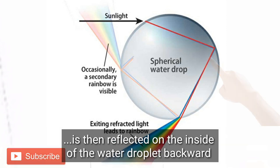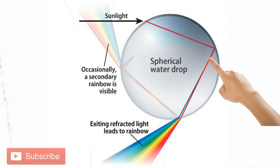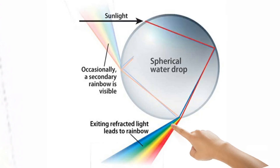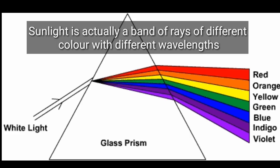Now the light ray inside the water droplets is then reflected on the inside of the droplets backward towards its original direction. As the light rays come out of the water droplets, they are refracted once again.